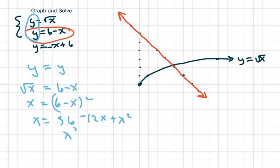That's going to be x squared. I'm going to subtract x from both sides, so it's going to be minus 13x, and this is positive, so plus 36, equals zero.